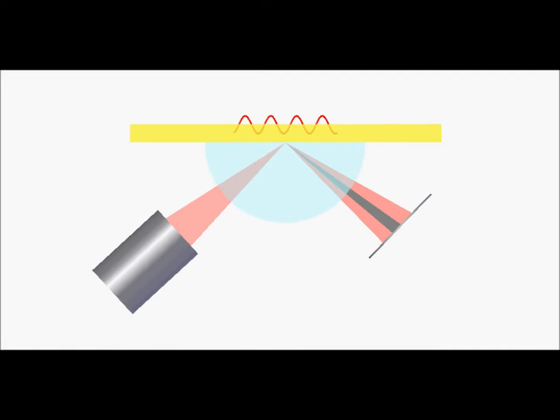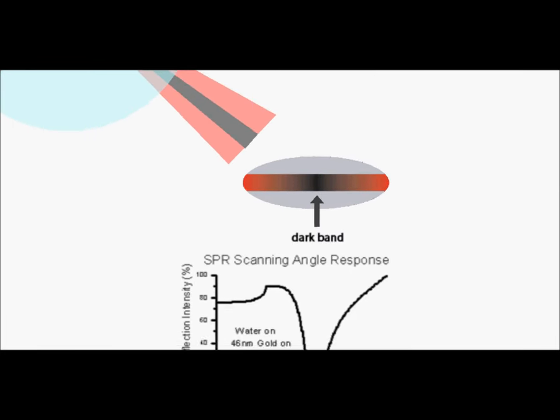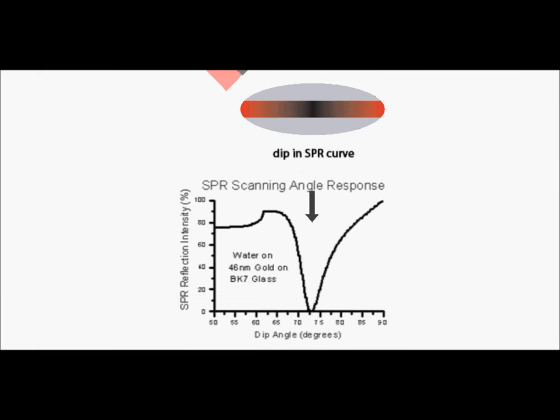The result is an intensity loss in the reflected beam, which appears as a dark band, and can be seen as a dip in the SPR reflection intensity curve. The shape and location of the SPR dip can then be used to convey information about the sensor surface.